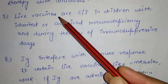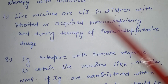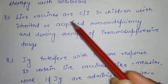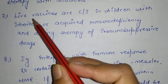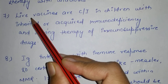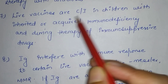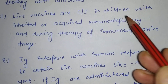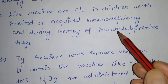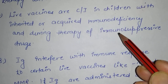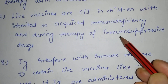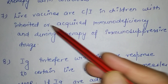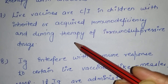The next principle is: live vaccines are contraindicated in children with inherited or acquired immunodeficiency syndrome, and in children receiving immunosuppressive drugs. Live vaccines like OPV, measles, and BCG are contraindicated if the child has AIDS or any condition causing immunosuppression. For example, if a child has cancer, live vaccines should not be administered as they can cause infection in an immunocompromised person.